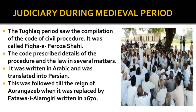Judiciary during the medieval period. The Tughlaq period saw the compilation of the code of civil procedure, called Fiqah-i-Firozshahi. The code prescribed details of procedure and law in several matters. It was written in Arabic and translated into Persian. This was followed until the reign of Aurangzeb, when it was replaced by Fatawa-i-Alamgiri, written in 1670.